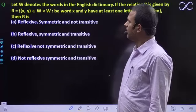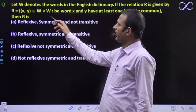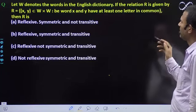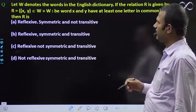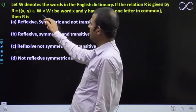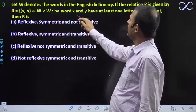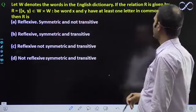Hello students, let W denote the words in the English dictionary. If the relation R is given by R equals {(x, y) belongs to W cross W such that words x and y have at least one letter in common}.